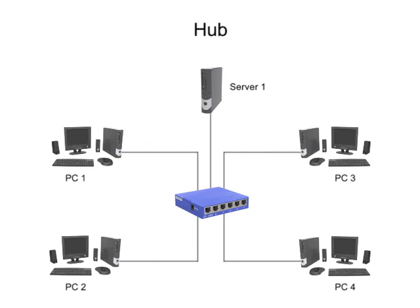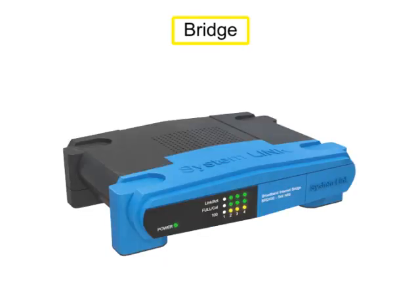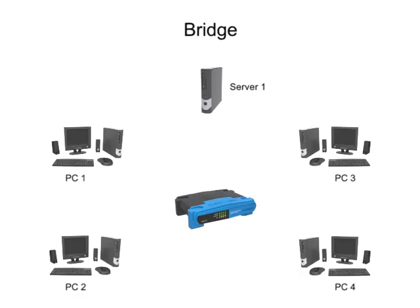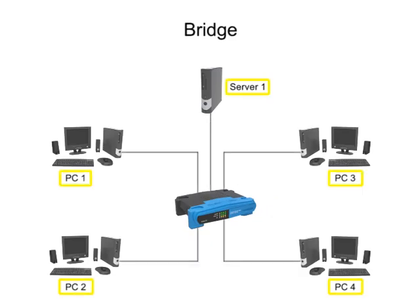Another network backbone device is called a bridge. Network bridges are smart devices that process and record information about signal traffic between devices in the network. The bridge then uses this information to determine the most efficient path for data transfer between a transmitting and a receiving device, without having to send it to every device in the network.